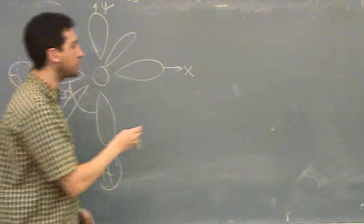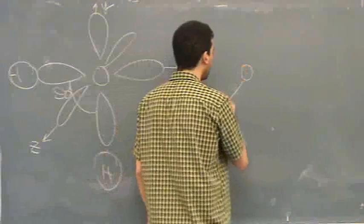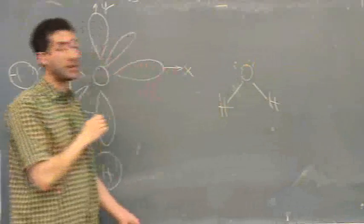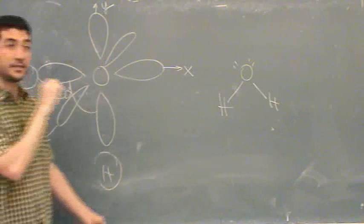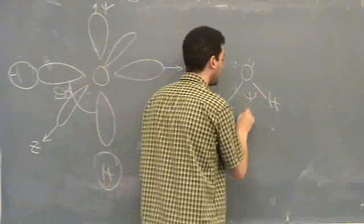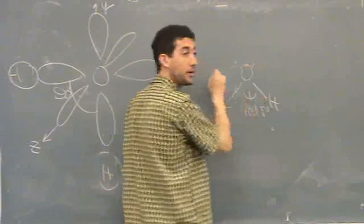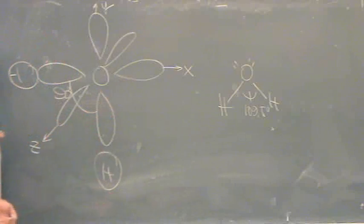The problem is when you do the Lewis structure for water, you'll get this. And what's the bond angle for that one? Ideal. Yeah, 109.5, because there's four groups, one, two, three, four. So that's tetrahedral, 109.5.